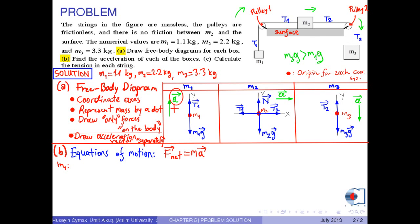Therefore, the net force on the y-axis for mass M1 becomes T1 minus M1 G, which is equal to M1 times A. As you notice, there is no motion along the x-axis for mass M1.